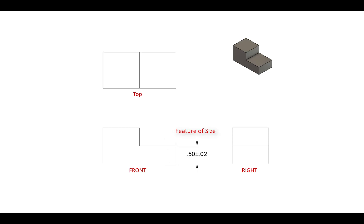The feature of size dimension is 0.5 with a tolerance of plus or minus 0.02, which means that the part can measure anywhere between 0.48 and 0.52. So we can say that the lower size limit for this feature is 0.48 and the upper size limit for this feature is 0.52.